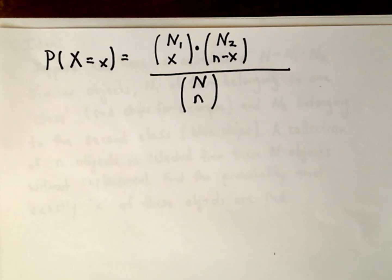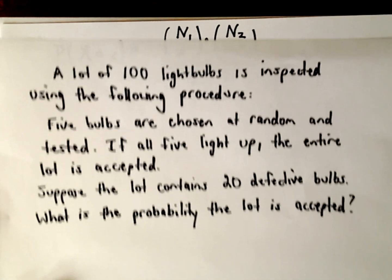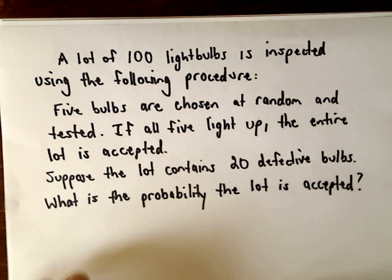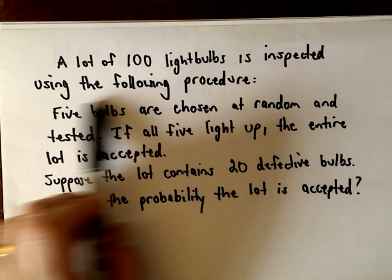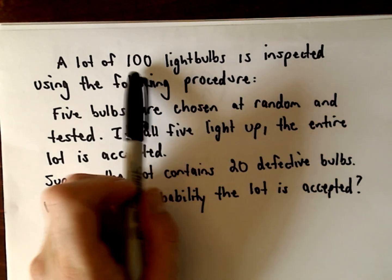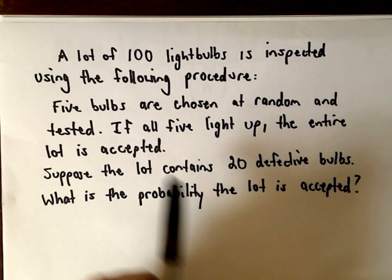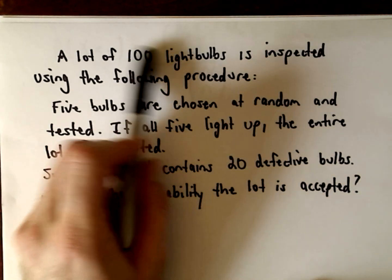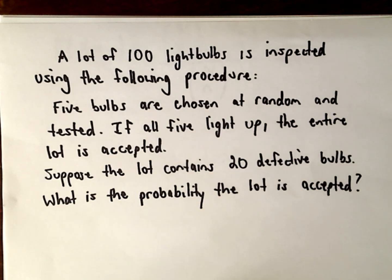So let's do a basic quote-unquote real-life example here. Suppose you're working at a factory, you're the quality control person. A lot of 100 light bulbs is inspected using the following procedure: five bulbs are chosen at random and tested. If all five light up, the entire lot is accepted.